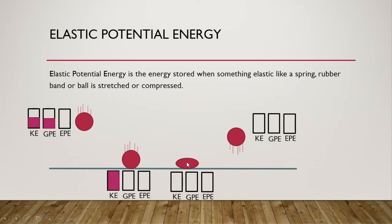Next, over here, we notice that we don't have our movement lines anymore, so we're no longer moving. We're at the ground, so we no longer have height, but we see that our ball is compressed. Because our ball is compressed, we're going to have some elastic potential energy.